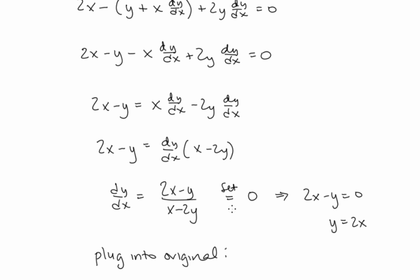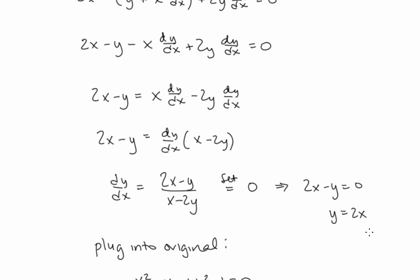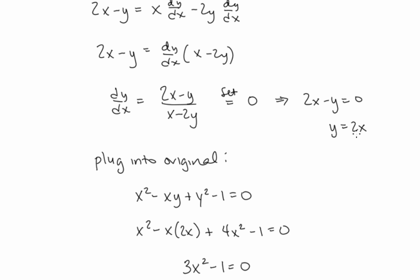We need dy/dx equal to 0 to find points with a horizontal tangent line. Setting the numerator equal to 0 gives 2x minus y = 0, or y = 2x. But that doesn't specify points yet — we know the derivative is 0 when y = 2x. Since those points also satisfy the original equation, we substitute y = 2x into the original equation.